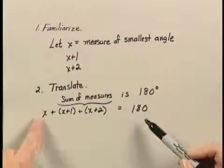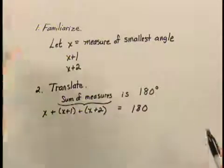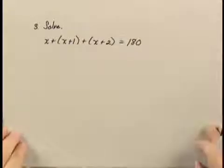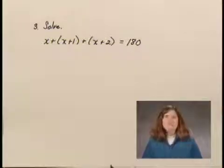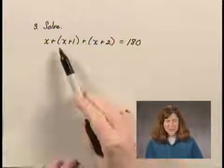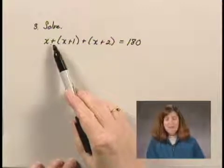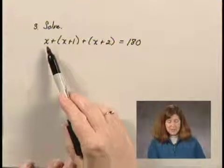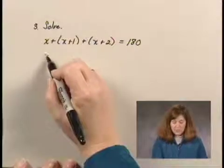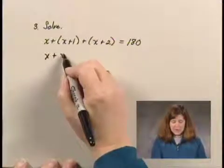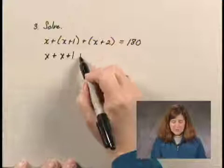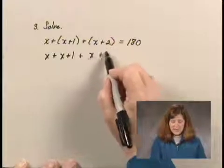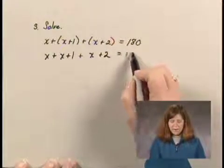Now we have an equation with one variable x, which we can solve in the third step of our problem-solving process. To do so, we'll first remove the parentheses. They are not multiplied by anything. They're simply added, not subtracted. So in this case, we can just remove them. We have x plus x plus 1 plus x plus 2, and that has to equal 180.